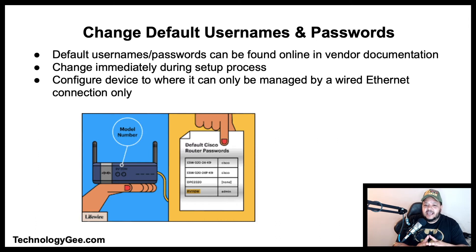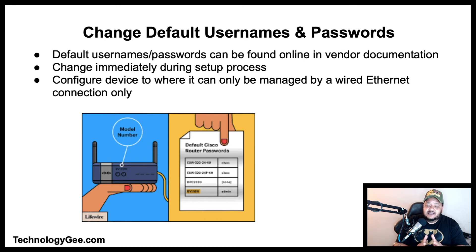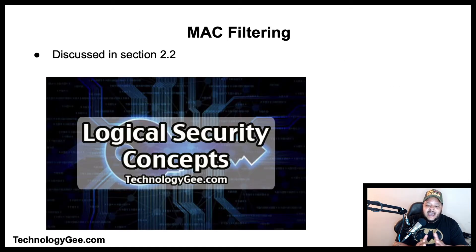Changing default usernames and passwords: default usernames and passwords for almost all wireless routers and access points can be found online in documentation readily available from the device's manufacturer. To protect against potential hackers exploiting your network, it is highly recommended that you change the default username and password immediately upon initial setup. Another way to further secure the device is to configure it so it can only be managed via a wired Ethernet connection.